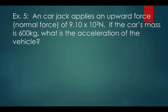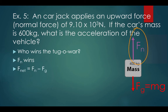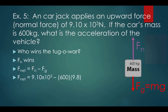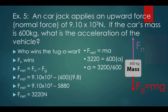Example number five: a carjack applies an upward normal force of 9.10 × 10³ newtons. If the car's mass is 600 kg, what is the acceleration of the vehicle? Here's a free body diagram. Since the car moves upwards, force normal wins. Fnet equals force normal minus force of gravity: Fnet equals 9,100 minus (600 × 9.8), which is 9,100 minus 5,880, giving Fnet equals 3,220 newtons. Using Fnet equals mass times acceleration: 3,220 equals 600 times a, so acceleration equals 5.33 meters per second squared upwards.